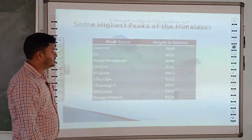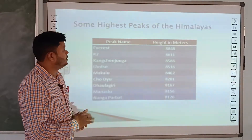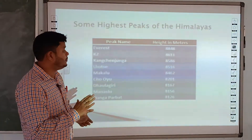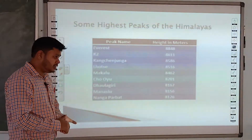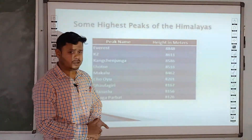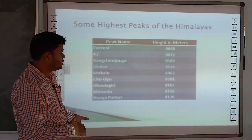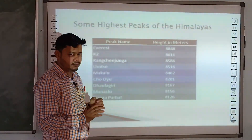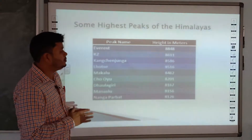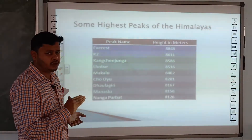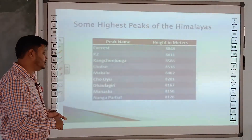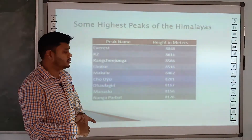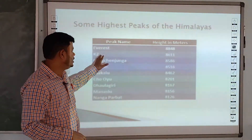Now let us look at some peaks of the Himalayan mountain range. The first and highest peak is Mount Everest, at a height of 8,848 meters — the highest peak of the world, which is located in Nepal.